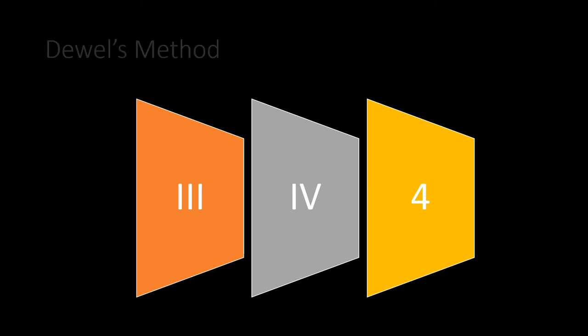Diebel's method consists of three steps. It starts with extraction of the deciduous canine to resolve incisor crowding. Extraction of the first deciduous molar accelerates the eruption of the permanent first premolar, which is then the last to be extracted.